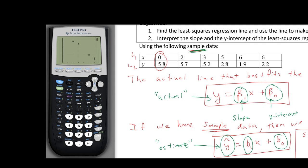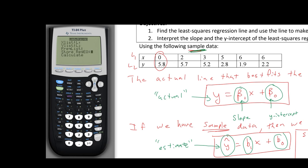Let's quit out and go to STAT > CALC > LinReg(ax+b), which should be the fourth option. Pay close attention: 'a' is the slope and 'b' is the y-intercept. X list is L1, Y list is L2. After calculating, the output shows y = ax + b. The slope is negative 0.71, which makes sense because the scatter plot was going downward left to right. The y-intercept is 6.55, and the r value of negative 0.94 indicates a strong negative linear correlation.